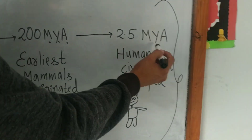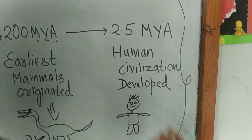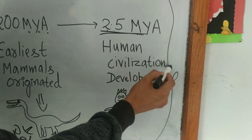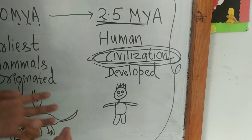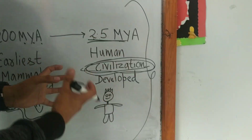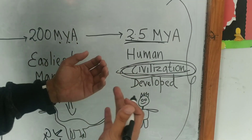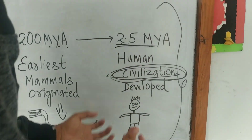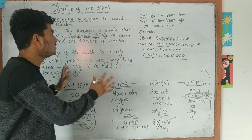Around 2.5 million years ago, human civilization developed. Human beings were first seen during this time. Civilization means the slow and gradual change in the lifestyle of people — for example, humans once lived in caves and ate raw food, but slowly and gradually we developed houses, science, and modern technology that have made our life very easy.